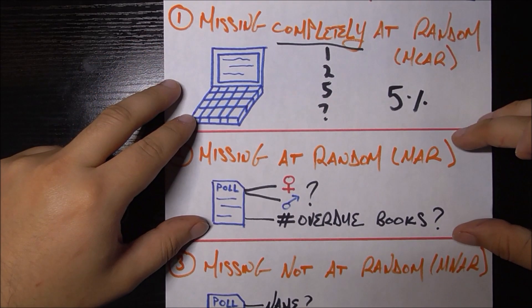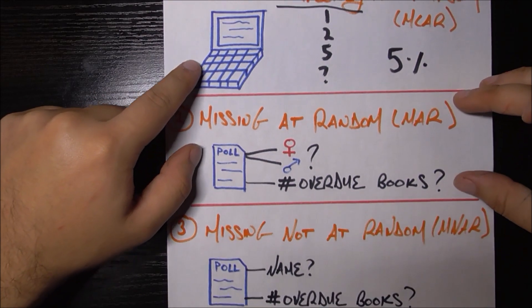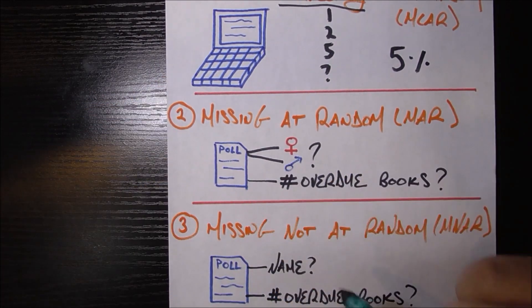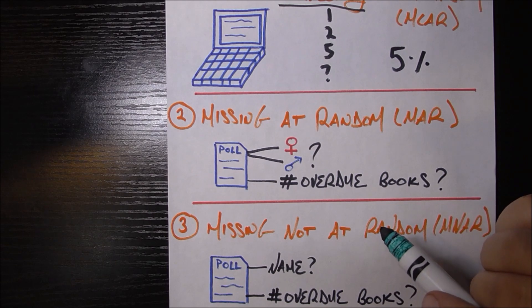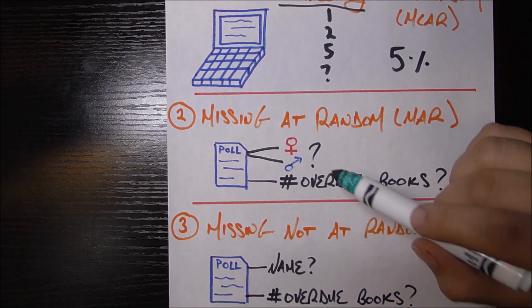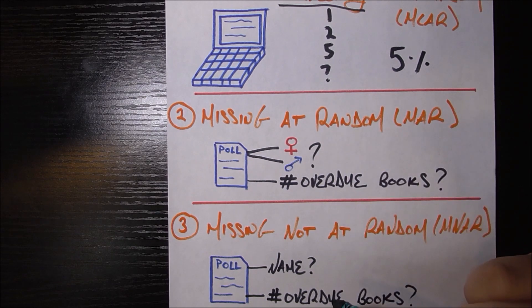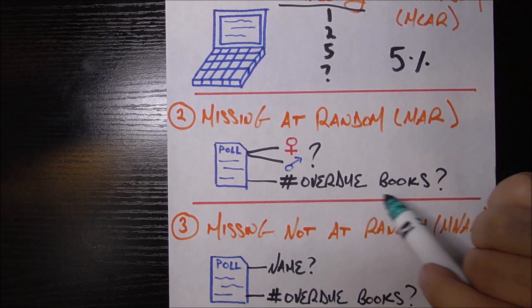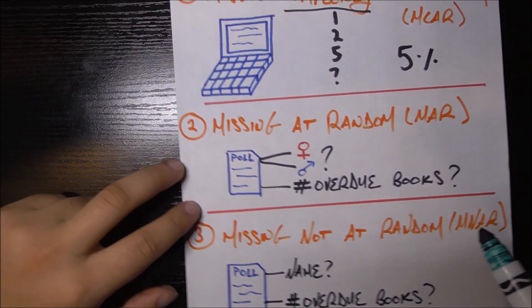To use this example, pretend you don't have access now to these library computers, so you have to do a poll and give a poll to every person in town. Let's say furthermore, you're also interested in whether males or females have more overdue books. So you ask each person, are you male or female? And you also ask them, what is the number of overdue books you currently have?